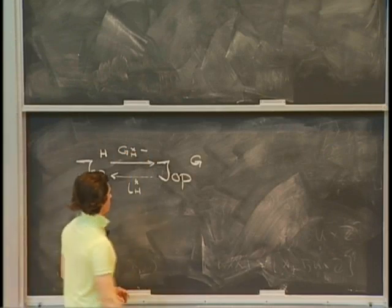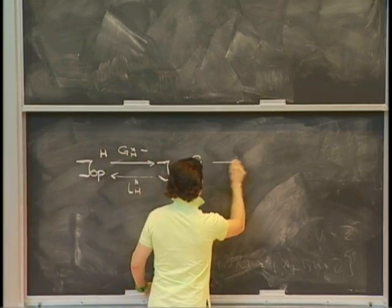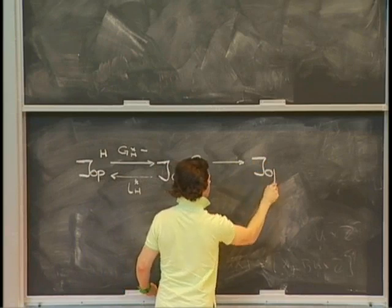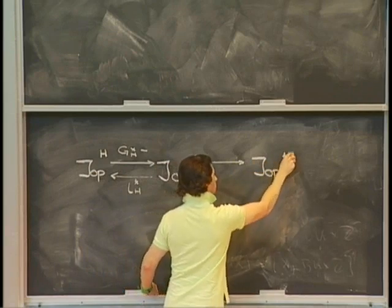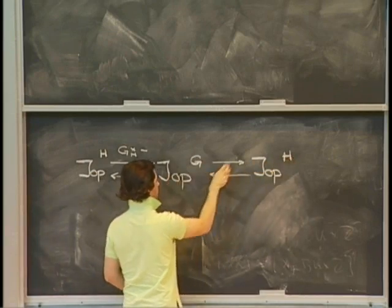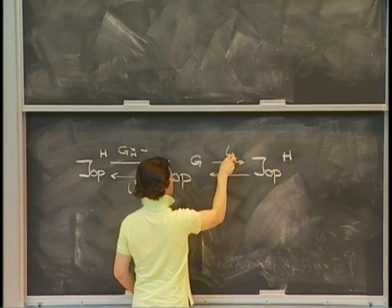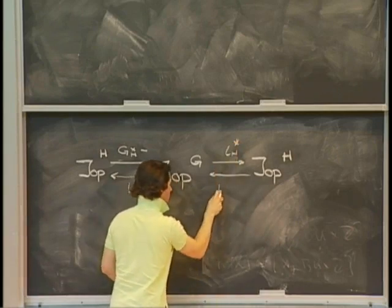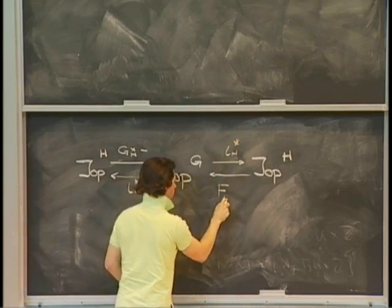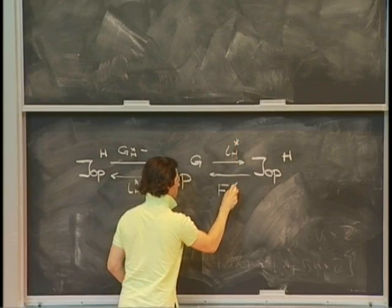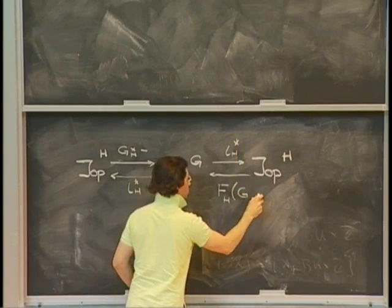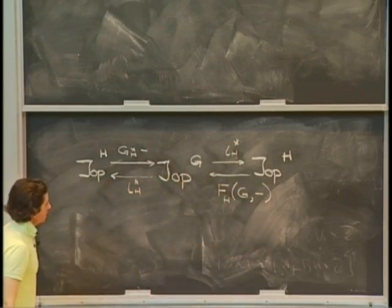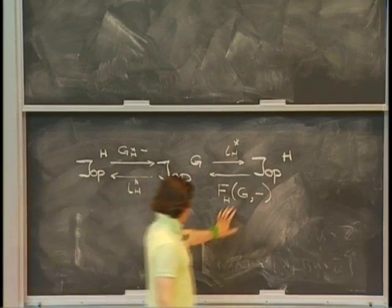The forgetful functor had a left adjoint, and the left adjoint was that G cross over H functor. On the other hand, the forgetful functor also has a right adjoint, and this one is the H-equivariant functions from G into something.